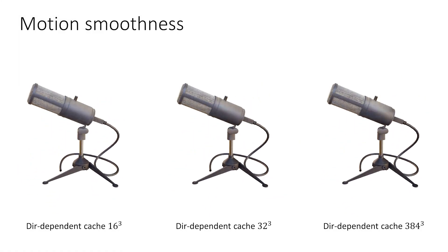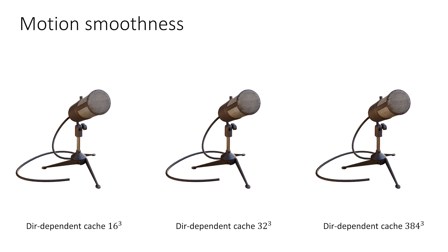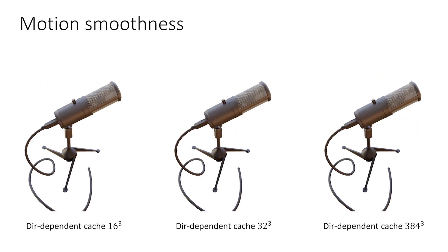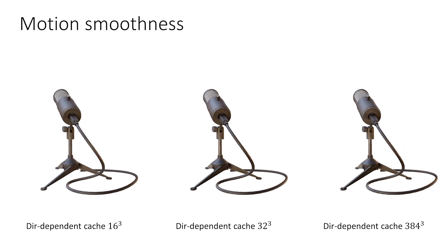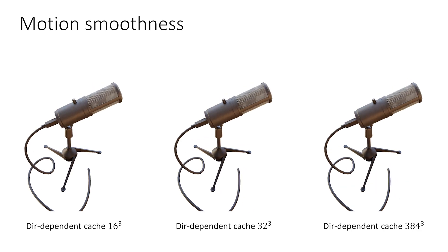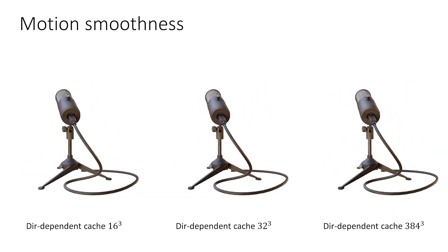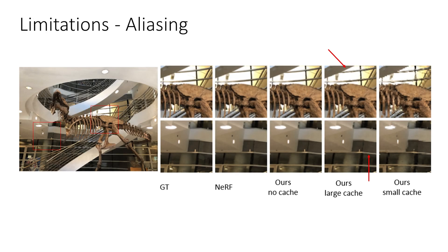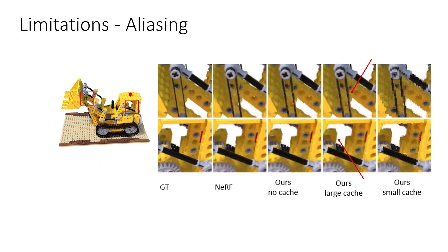We observe that the direction-dependent network can sometimes overfit to the data, which results in flickering as the camera position changes. To counteract this, we propose to simply use a smaller cache size for the direction-dependent component weights. Please see the supplementary materials for further details. Since we use nearest neighbor lookups for the RGBD caches, some aliasing artifacts can be observed, even at high cache resolutions. We found this to be most noticeable in results on the LLFF dataset. Note that these can be mitigated by supersampling in image or 3D space at the expected computational overhead.